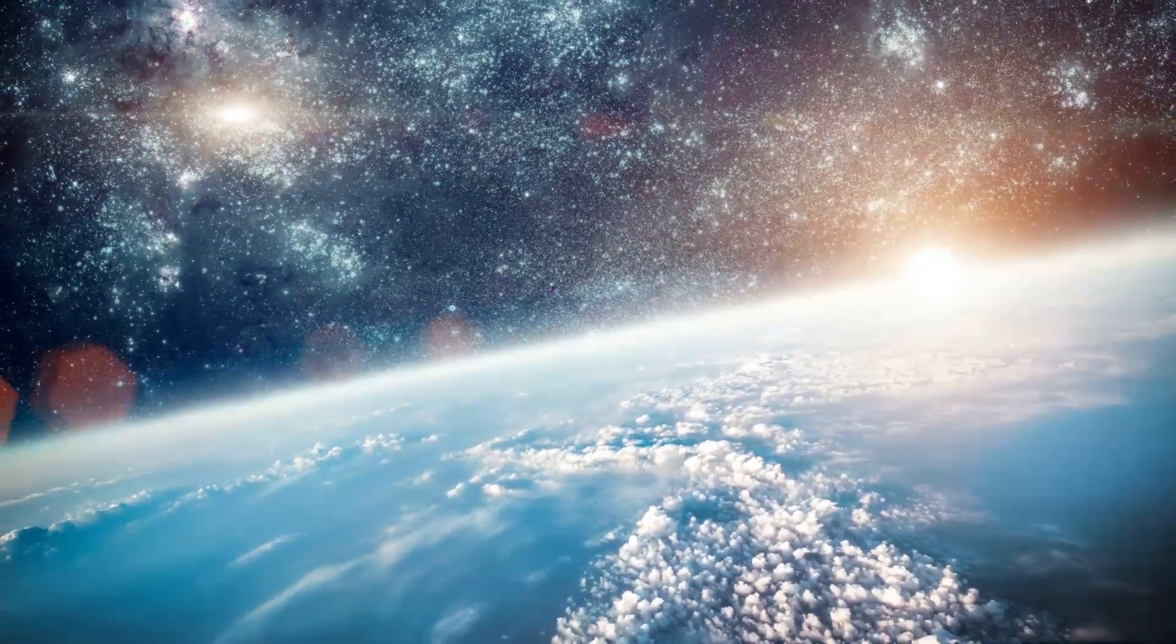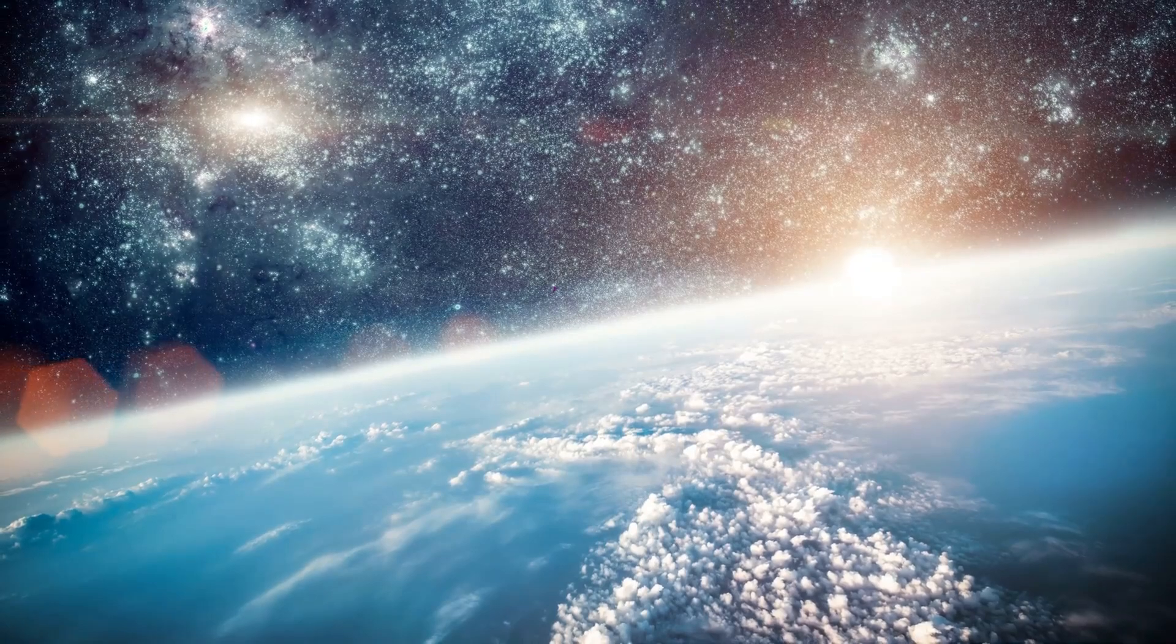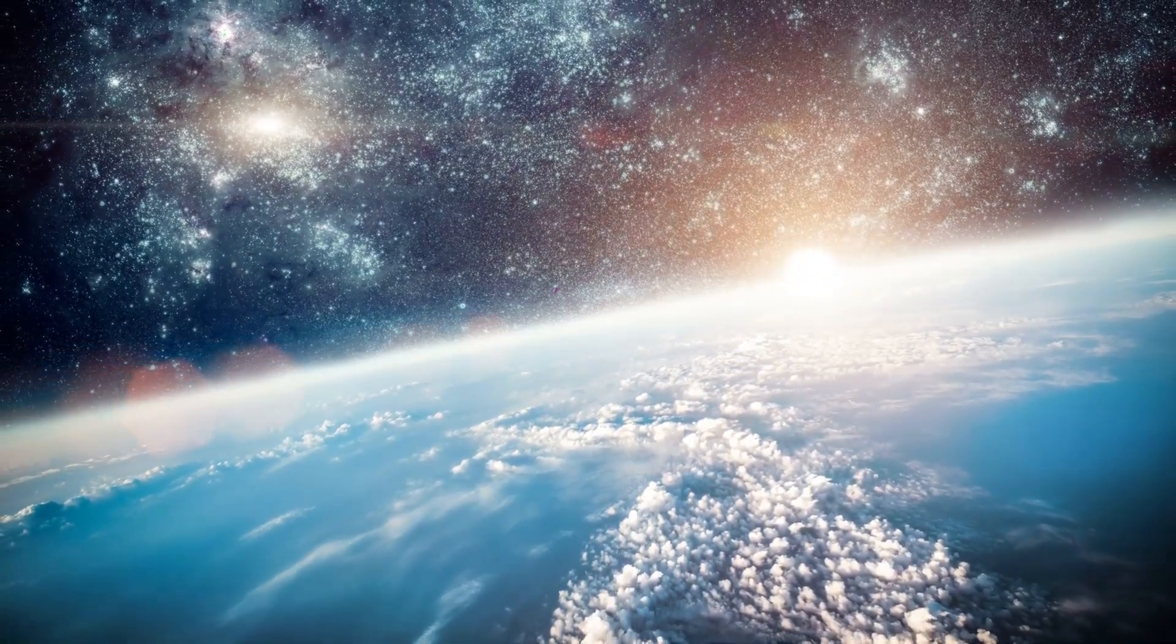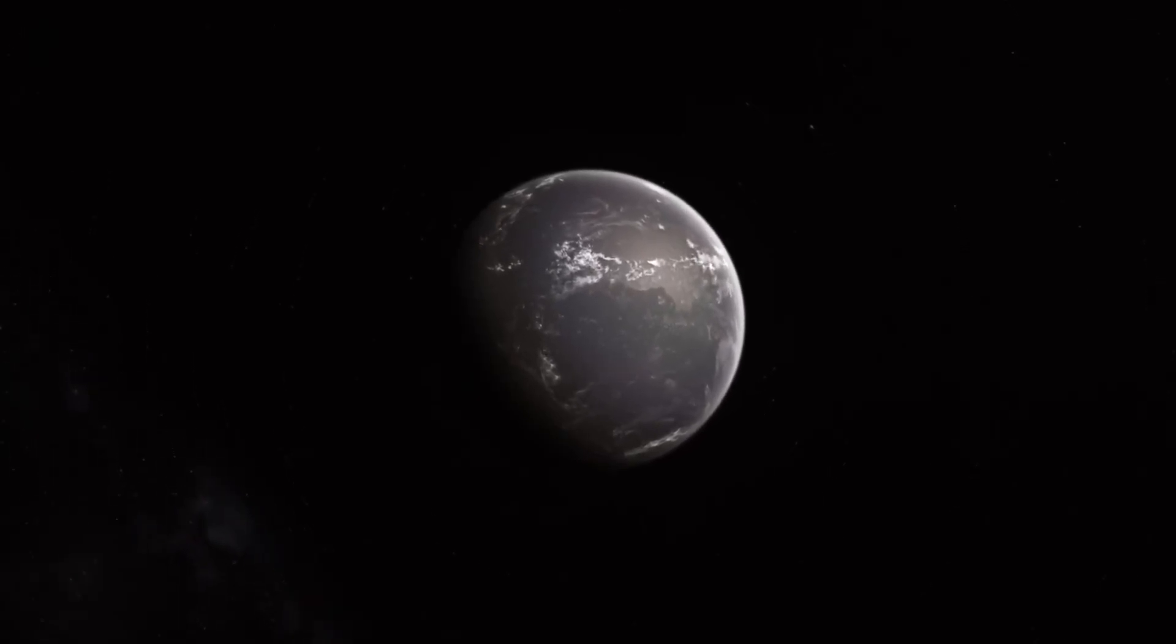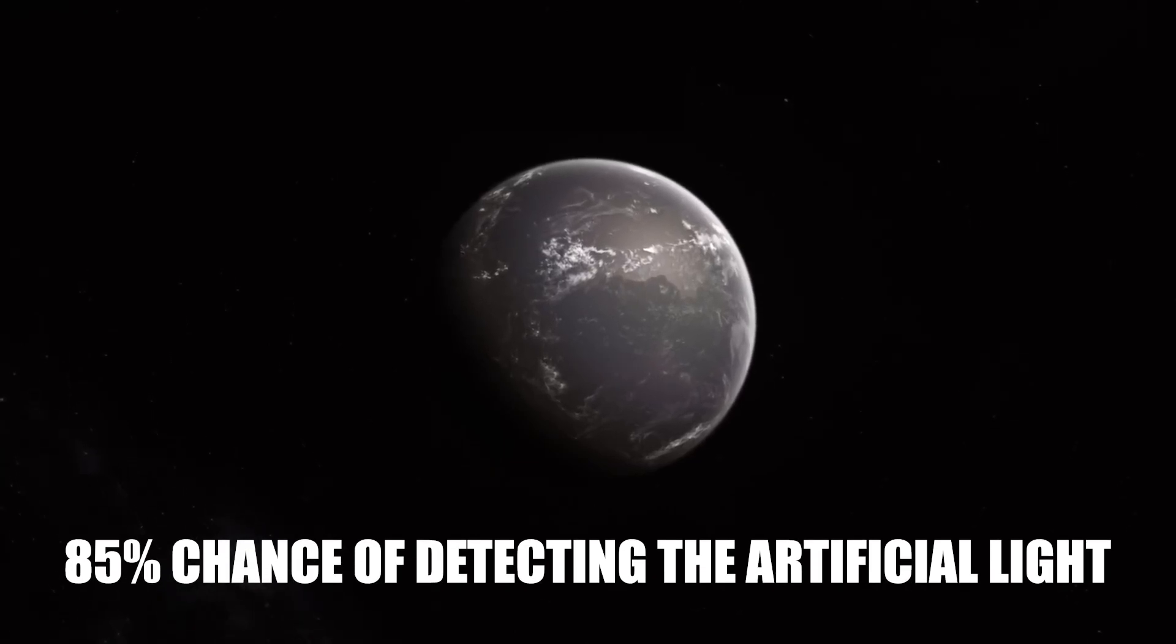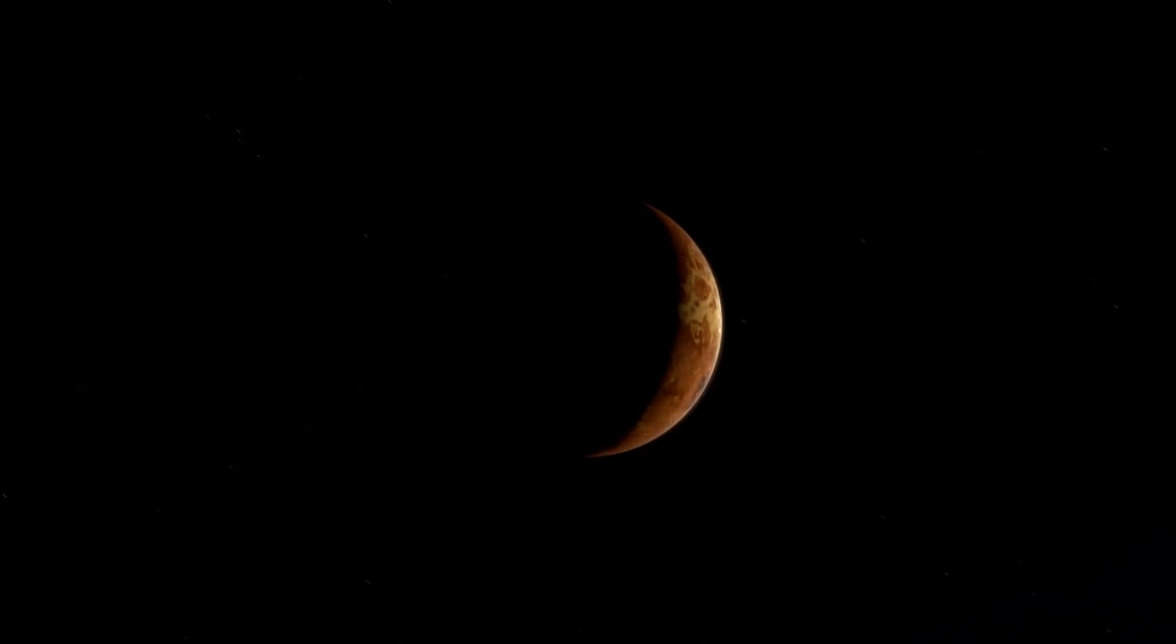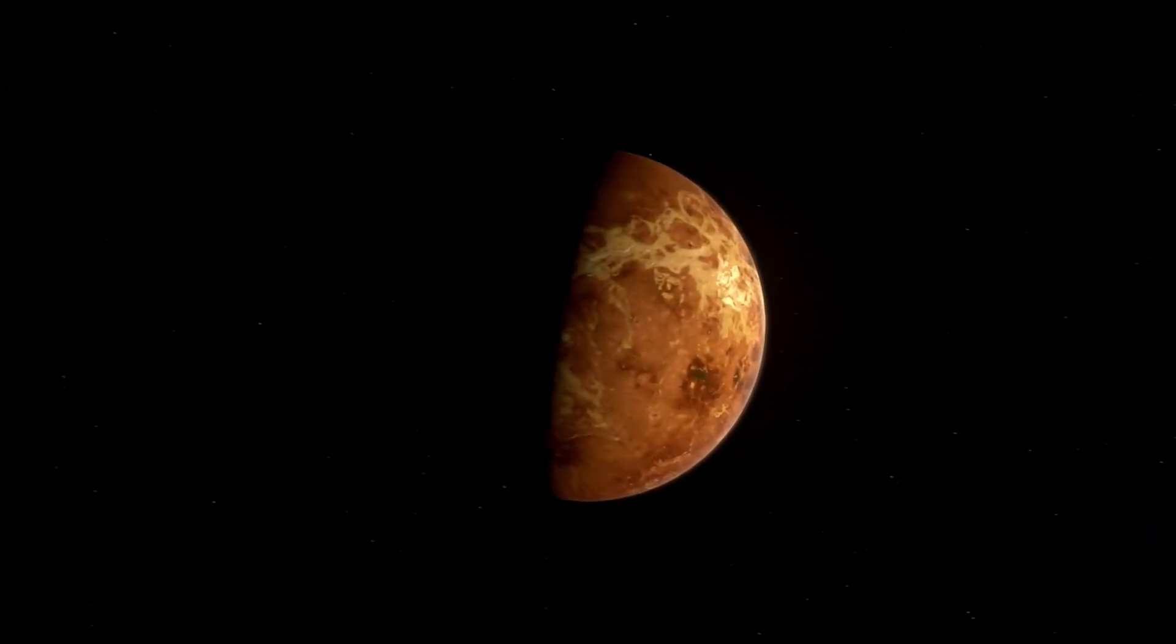According to Tabor and Loeb's calculations, the amount of sunlight reflected from Earth's day side is roughly similar to the amount of artificial light. If the artificial night side illumination of Proxima b reaches 5%, Webb will have an 85% chance of recognizing artificial light.